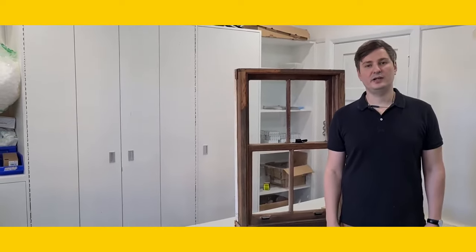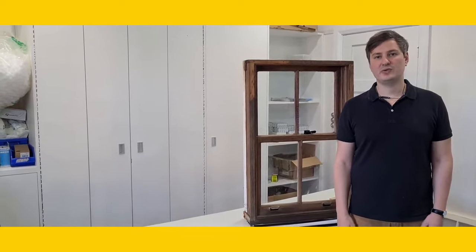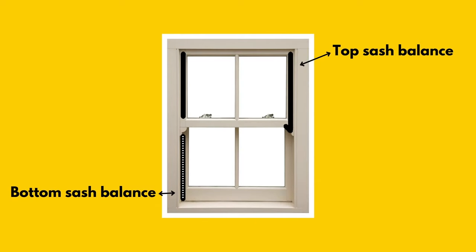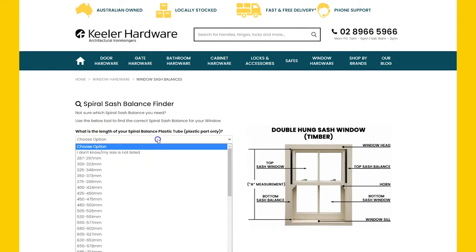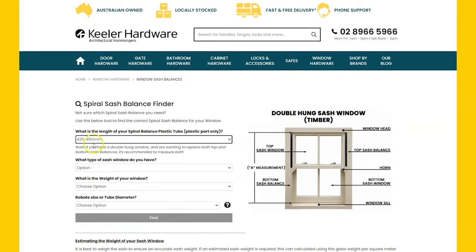For double hung sash windows, we recommend measuring both the spiral balances, the top and the bottom, because they may vary in size. For my window here, I'm going to choose the tube size 425 to 450 millimetres.